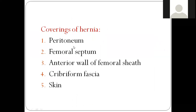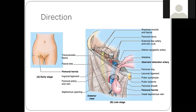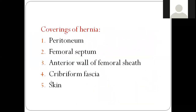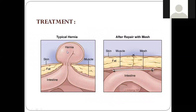The layers covering the femoral hernia, going from outside in: skin, cribriform fascia (at the saphenous opening), anterior wall of the femoral sheath (fascia transversalis), femoral septum, and then the peritoneum which the intestinal loop carries. Treatment: we should push the organs back manually, and then close the femoral ring tightly by suturing.